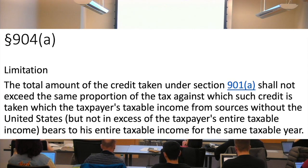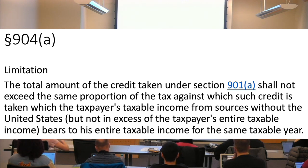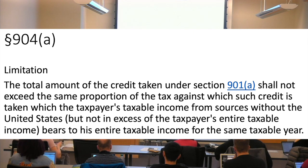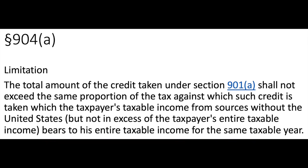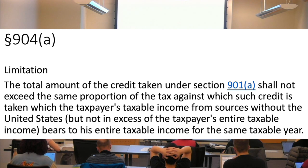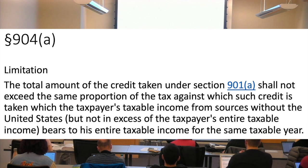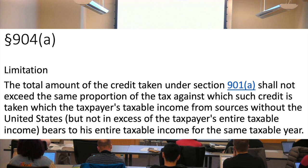First, let's look at what this says and then ask what is it doing and why is it there. The amount of the credit taken shall not exceed the same proportion of the tax before credit as taxable income from sources without the United States bears to his entire taxable income for the same taxable year.